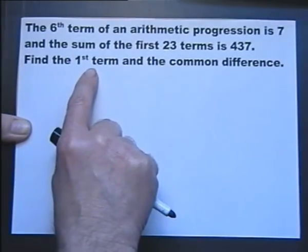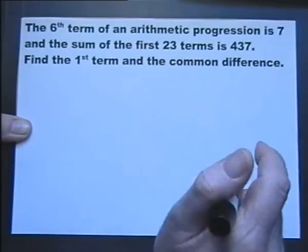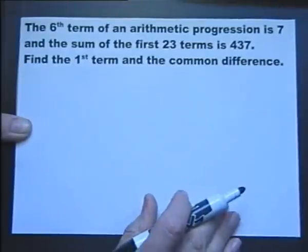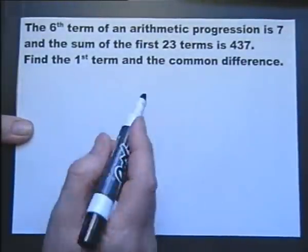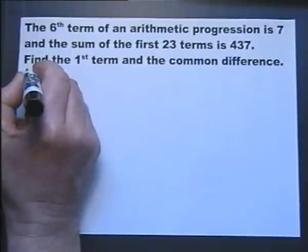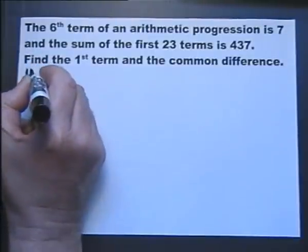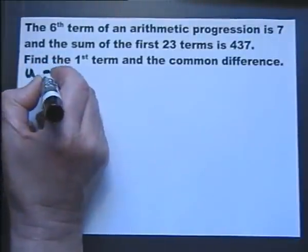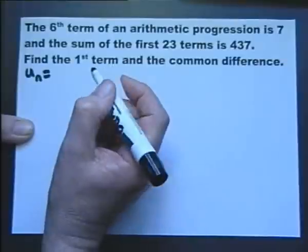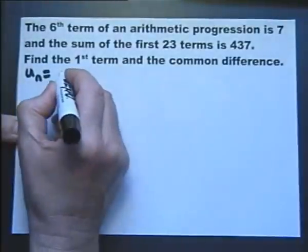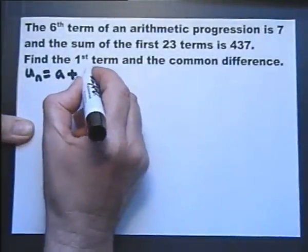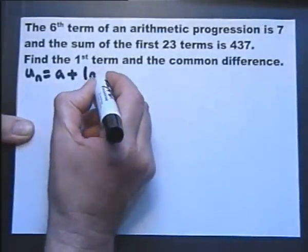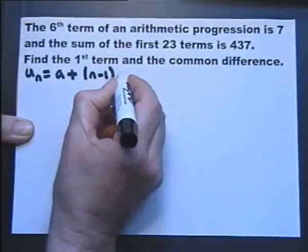Find the first term and the common difference — in other words, find A and D. The formula for the nth term is U_n equals A plus (n minus 1)D.